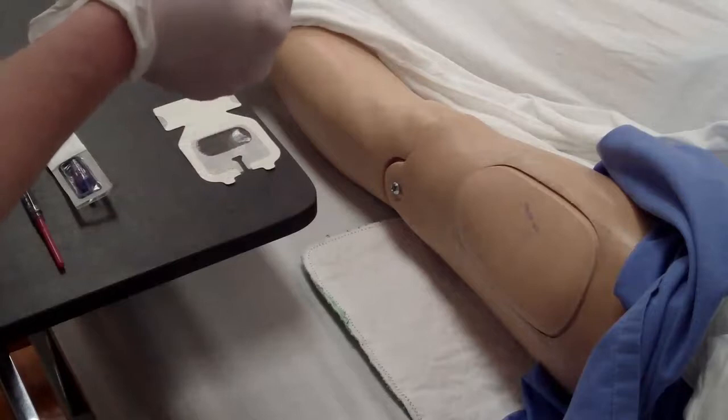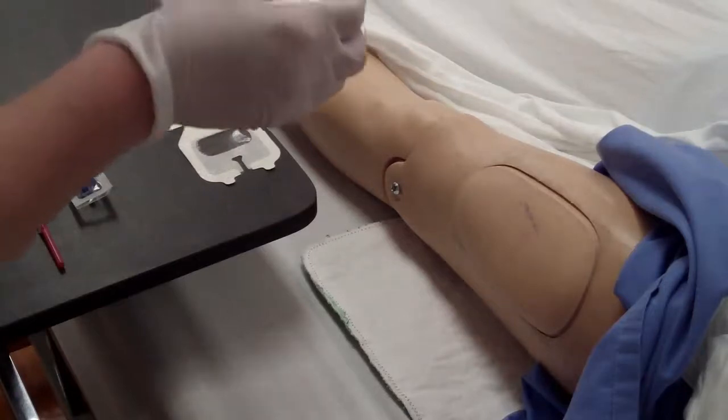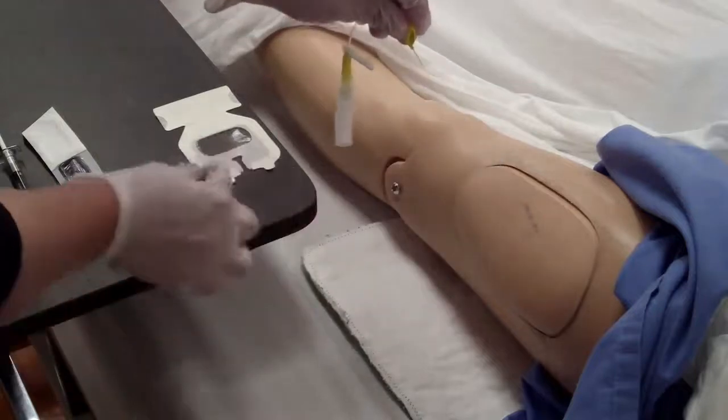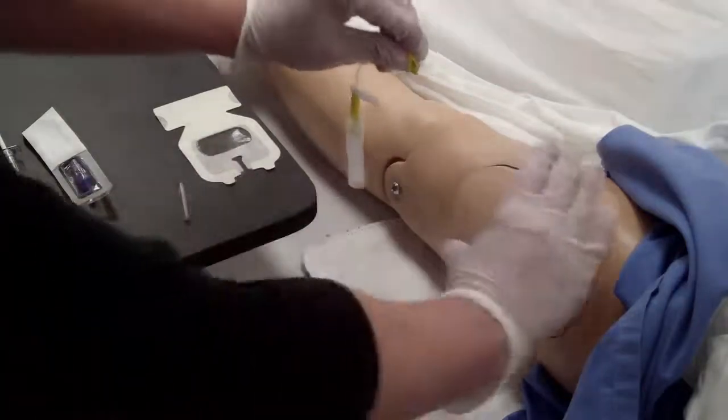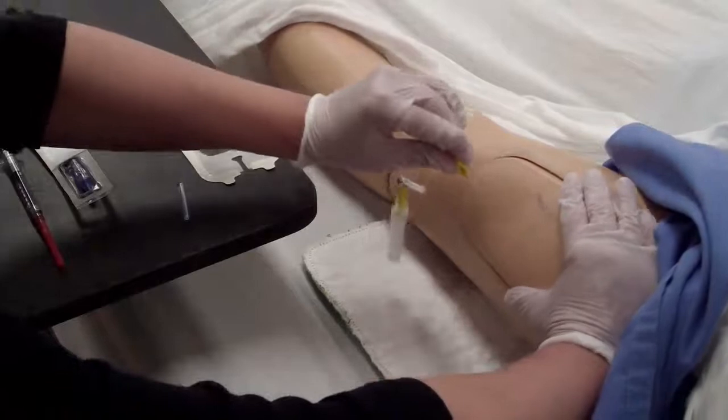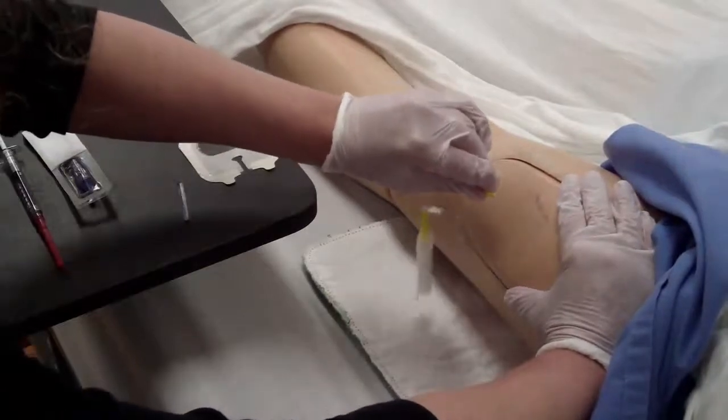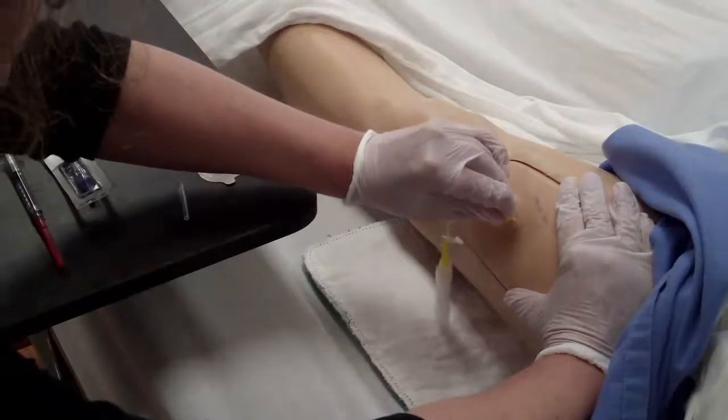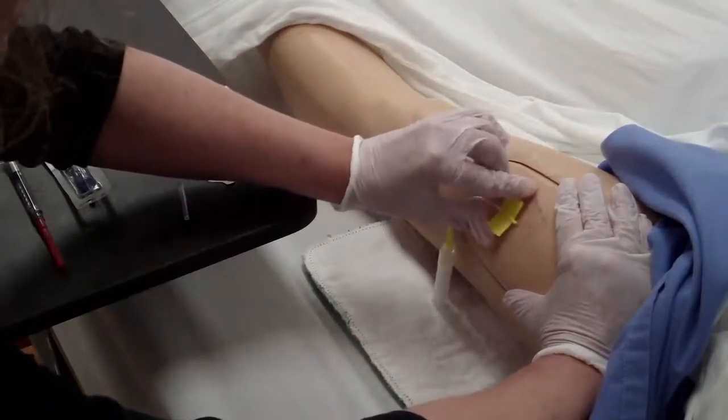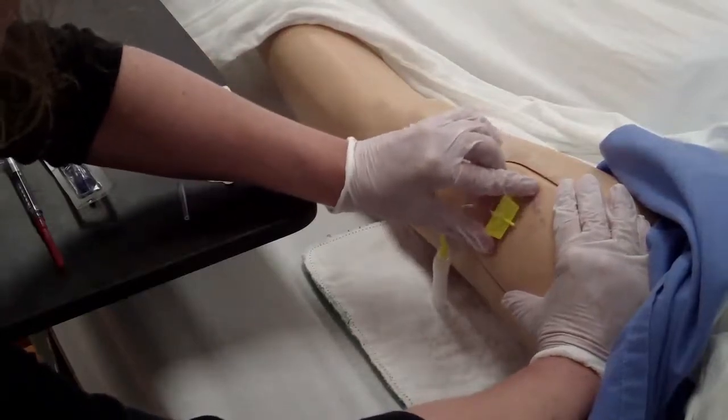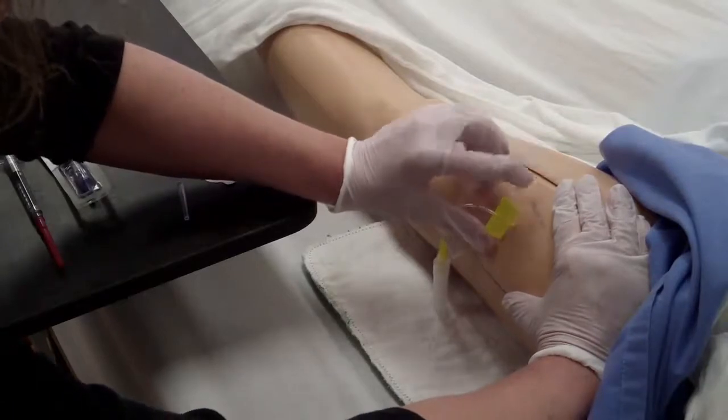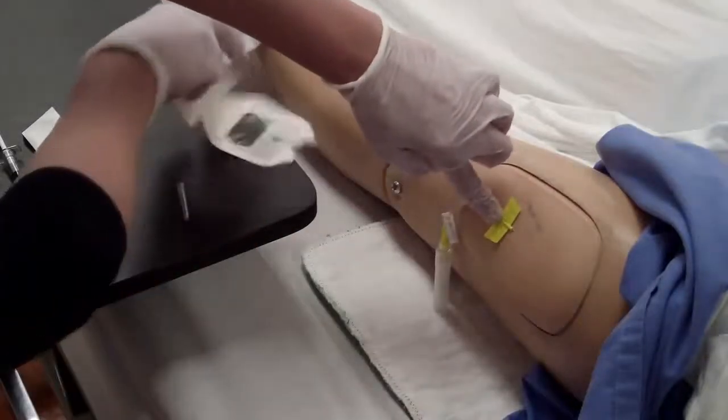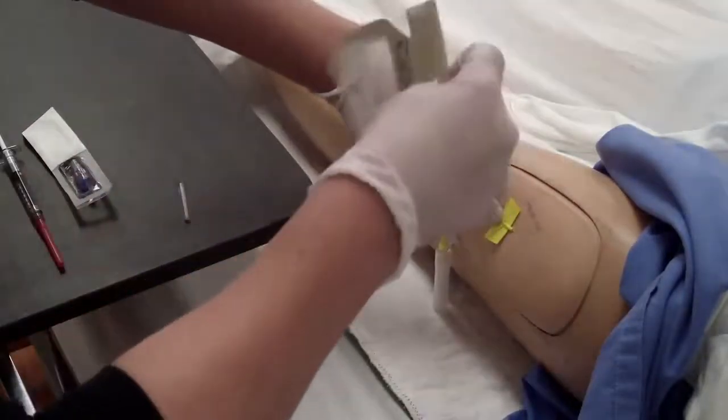With your subcutaneous butterfly, ensure that the bevel is up. Remember that the pebbled wings will be going against the client's skin. At a 30 to 45 degree angle, insert the needle firmly through the skin. Secure the catheter without touching the insertion site until the dressing is applied.